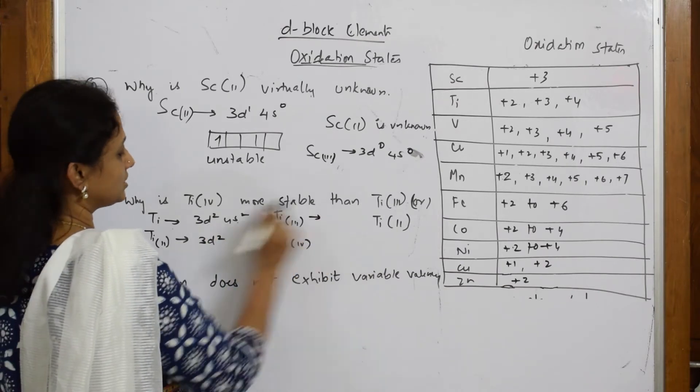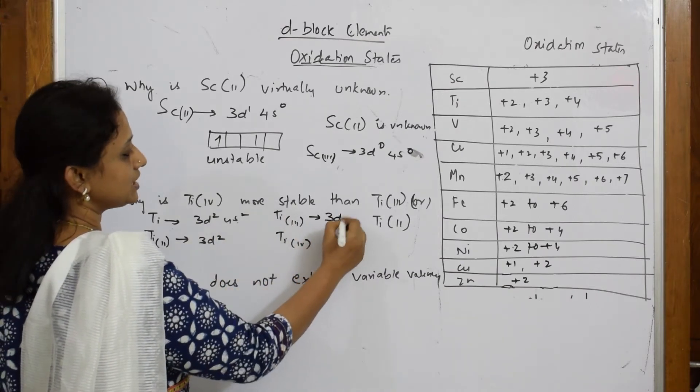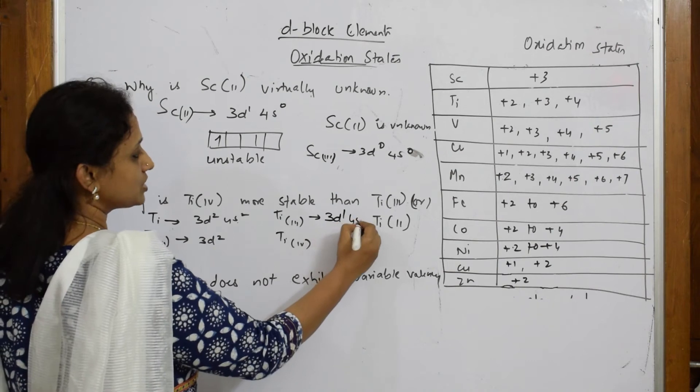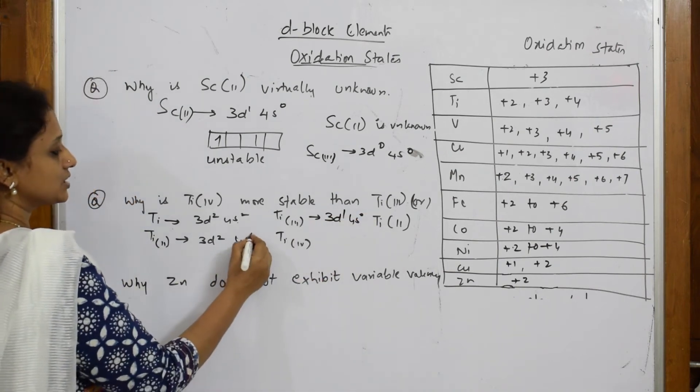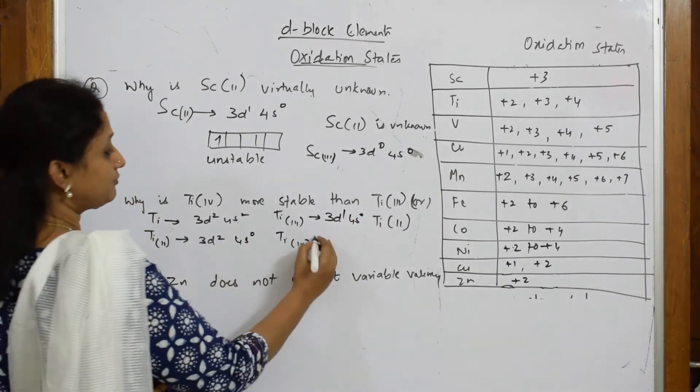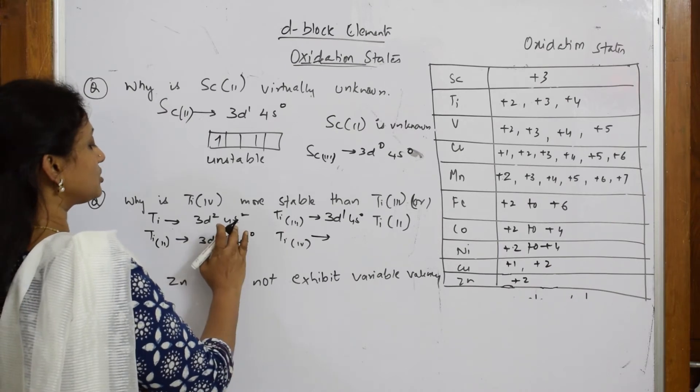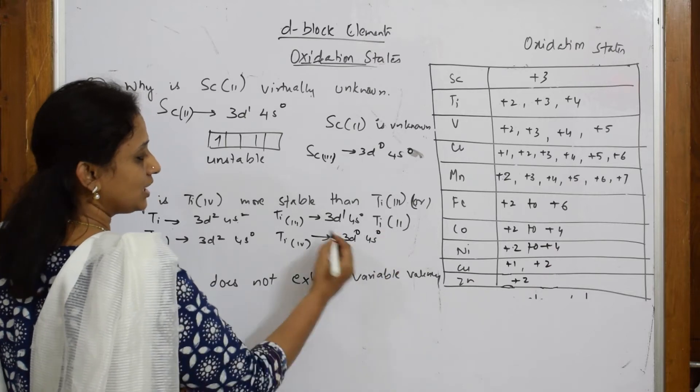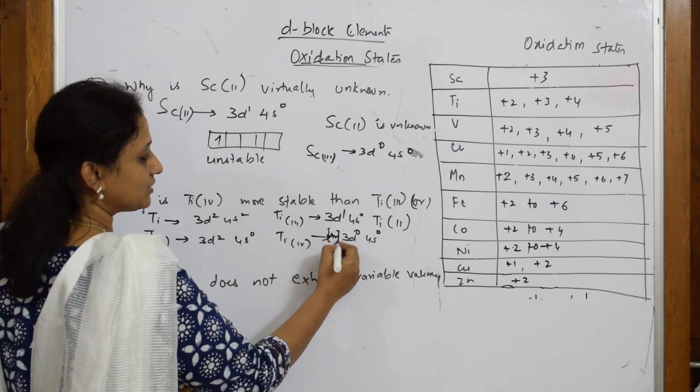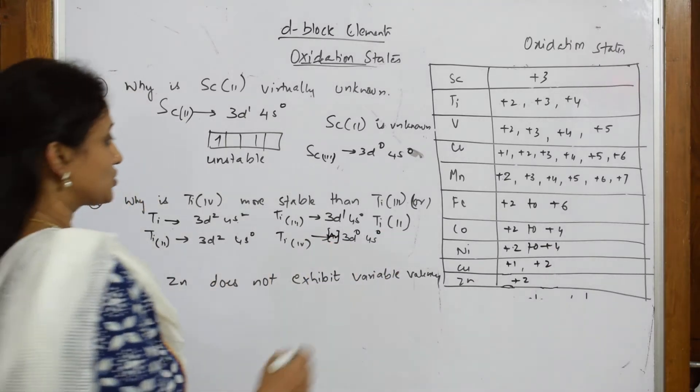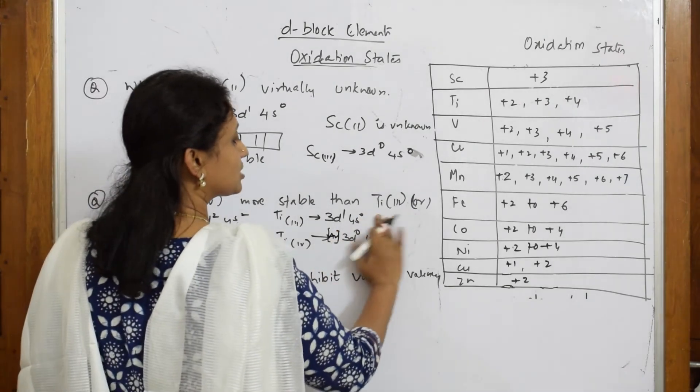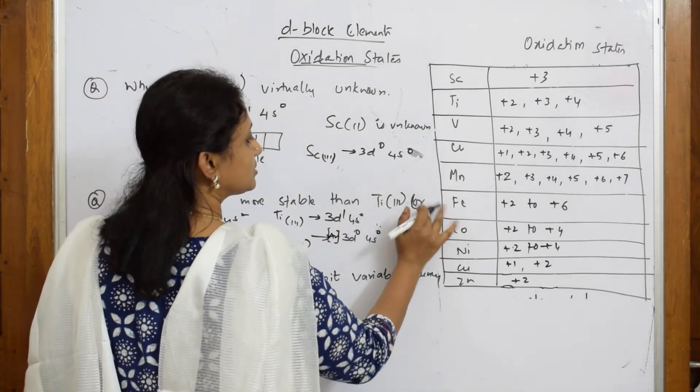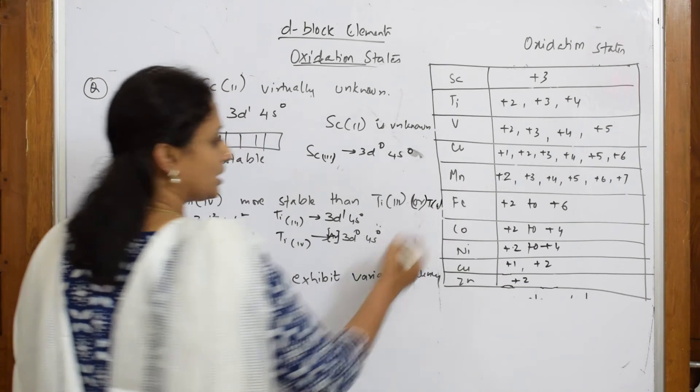For titanium +3, it's 3d1 4s0. For titanium +4, you're going to remove two electrons from here and two electrons from here. This becomes 3d0 4s0, and the configuration is argon configuration, stable.